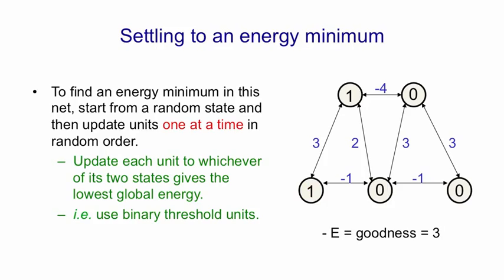Let's probe one more unit. This unit's more interesting. It's getting an input of one times two, plus one times minus one, plus zero times three, plus zero times minus one. So that's a total input of one, so it will now turn on. Previously it was off, and so when it turns on, the global energy changes. We now have a global energy of minus four, or a goodness of four, and that's a local energy minimum.